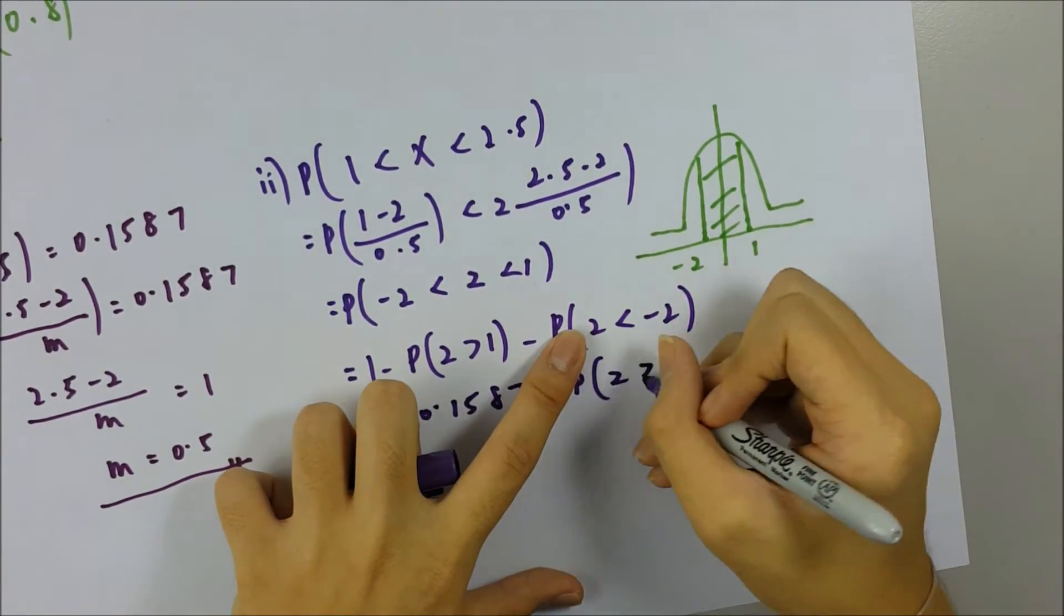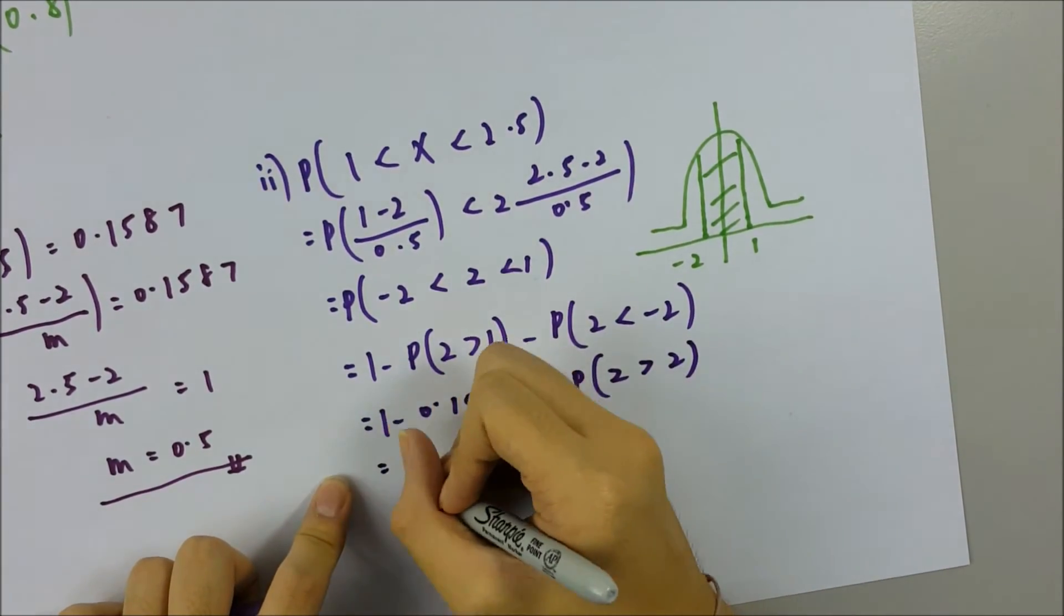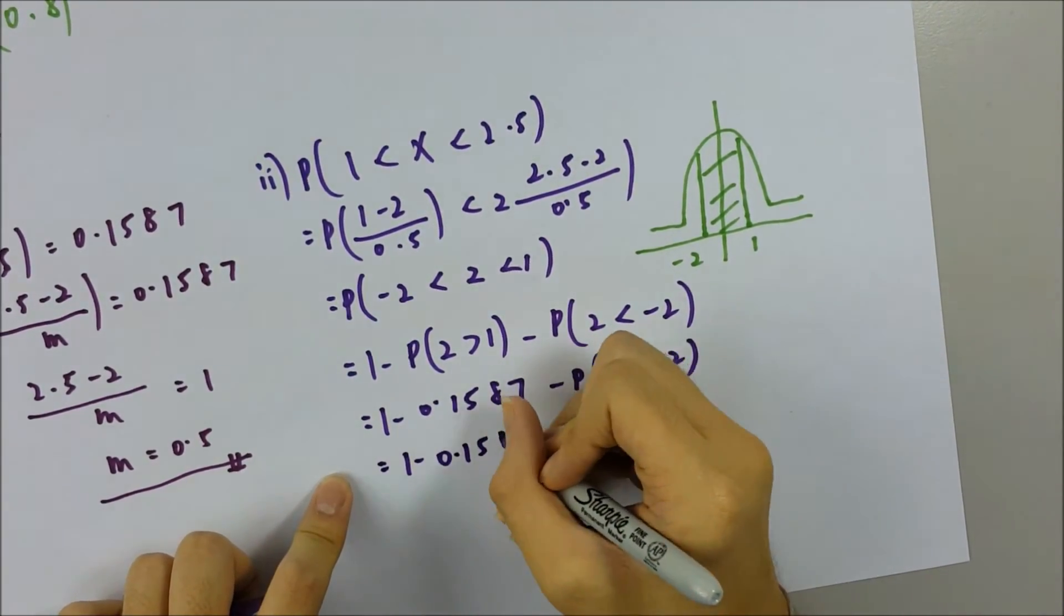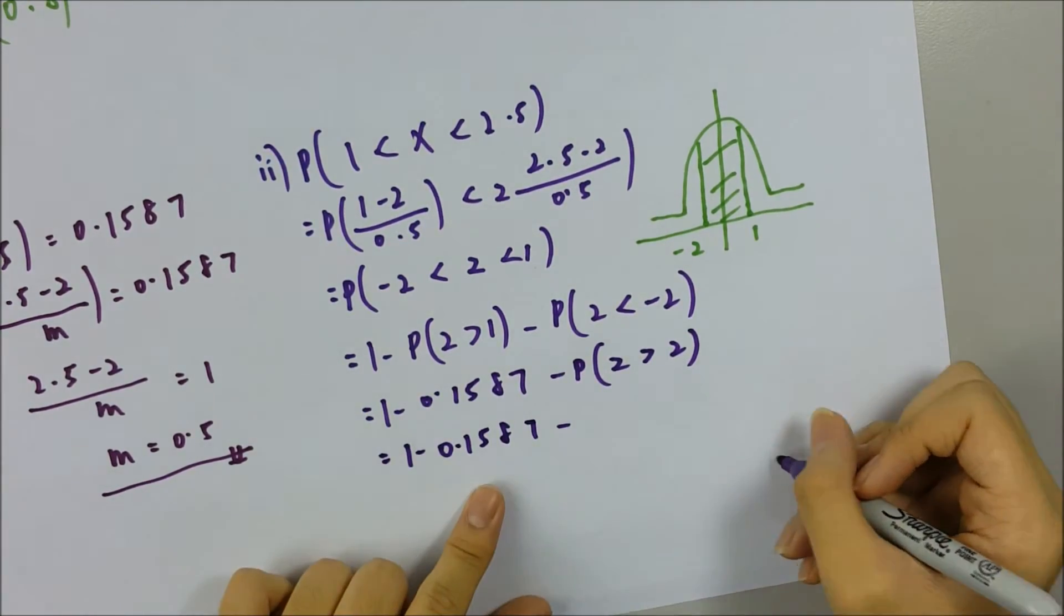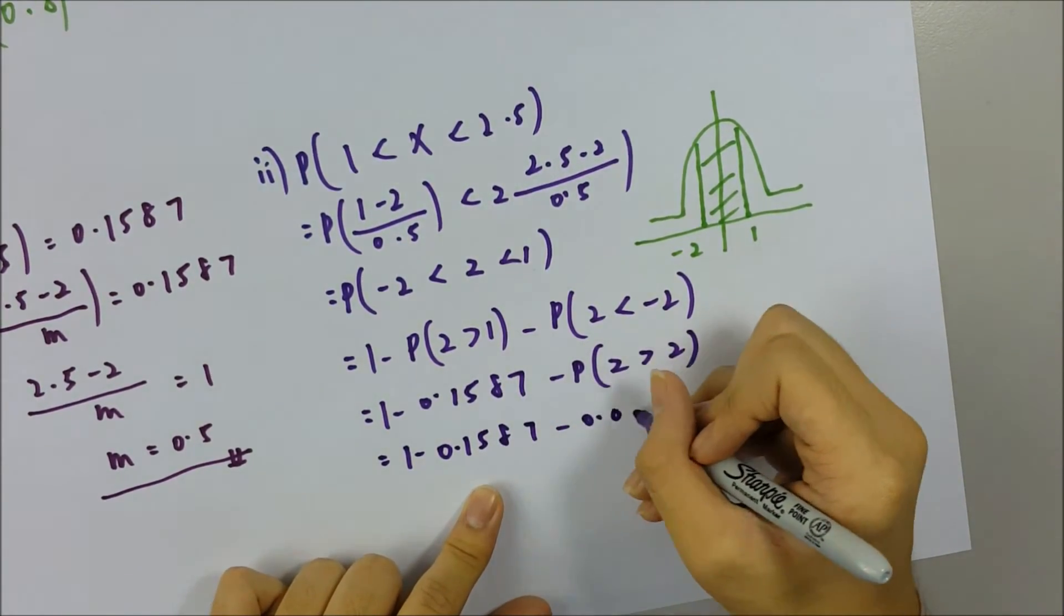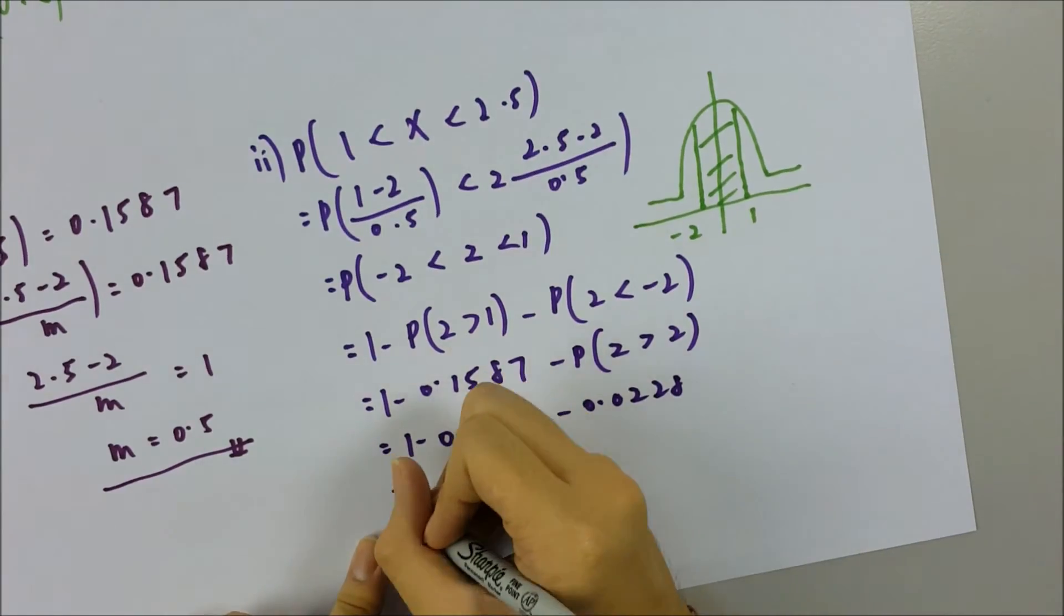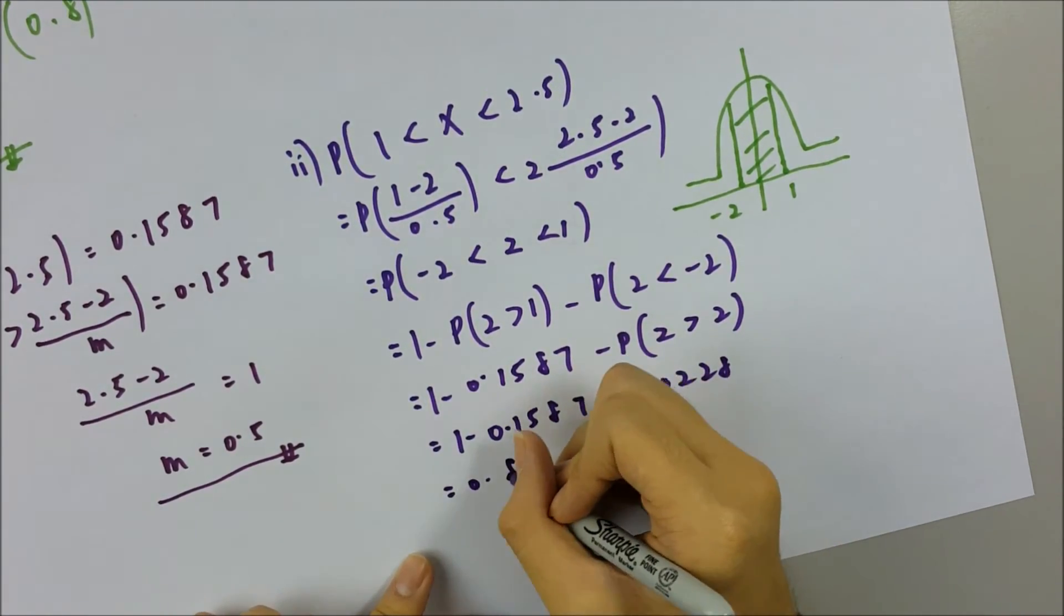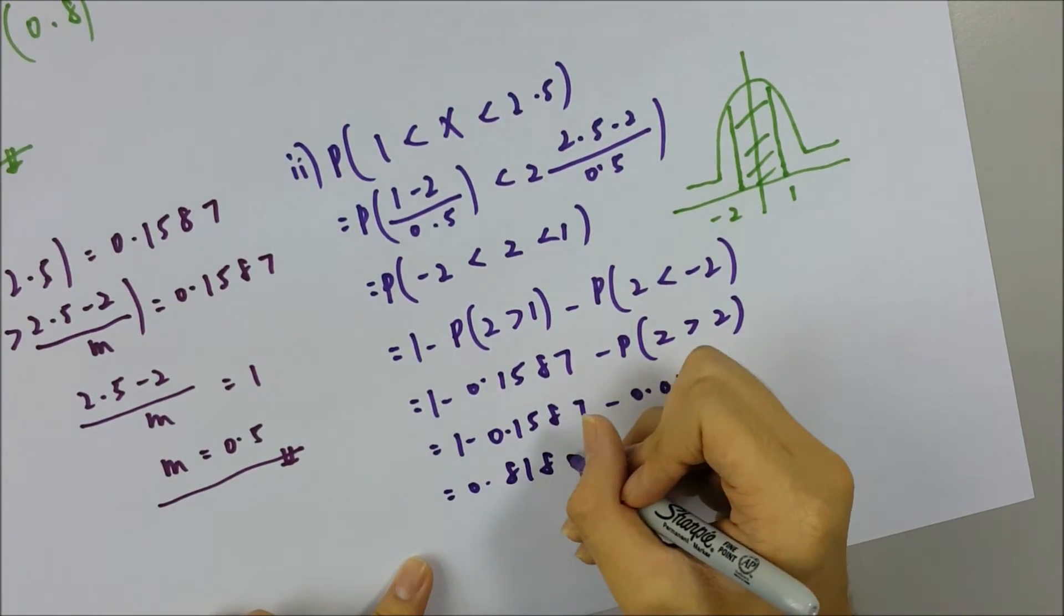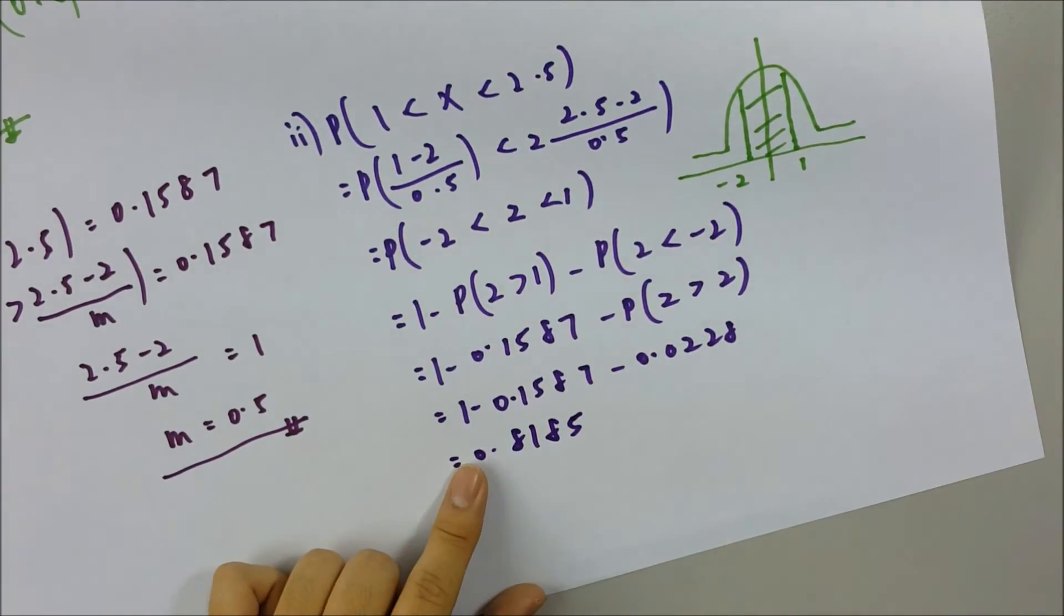So this equals, you look for it from your table, 0.1587. And this you can convert it to P(Z > 2). And 1 minus 0.1587 minus this, you look it from your table. Z = 2 equals 0.0228. So you press the calculator, the answer is 0.8185.